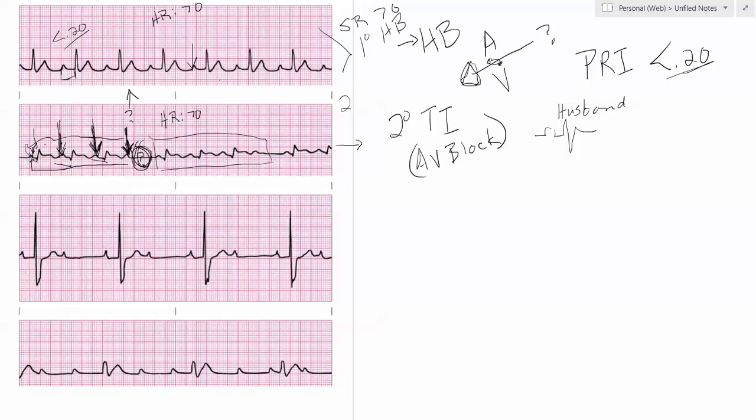So you've got the P, QRS, everything's lining out until you get to here. So that's a second degree type one.